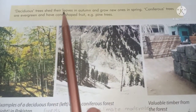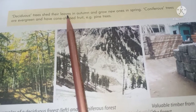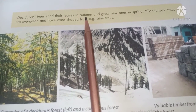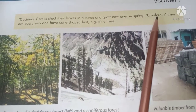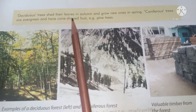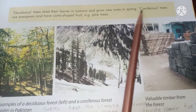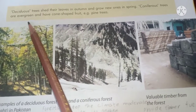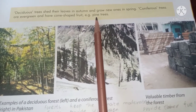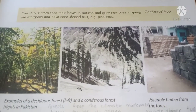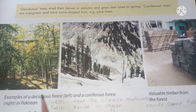Deciduous trees shed their leaves in autumn and grow new ones in spring. Coniferous trees are evergreen and have cone-shaped fruit — for example, pine trees. These are the basic types with examples shown in diagrams of a deciduous forest on the left and a coniferous forest on the right in Pakistan.